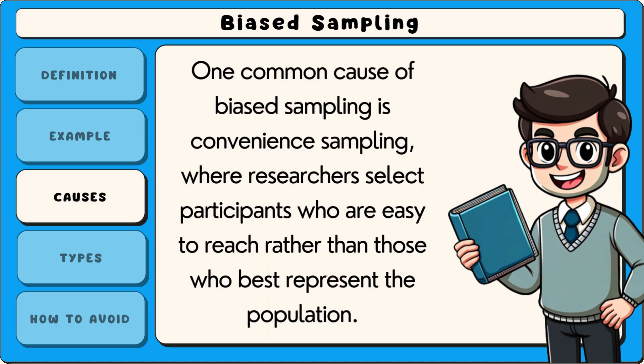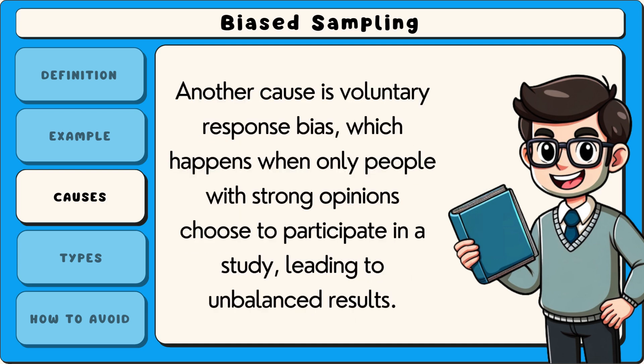Now let's explore some common causes of biased sampling. One common cause is convenience sampling, where researchers select participants who are easy to reach rather than those who best represent the population. Another cause is voluntary response bias, which happens when only people with strong opinions choose to participate in a study, leading to unbalanced results.